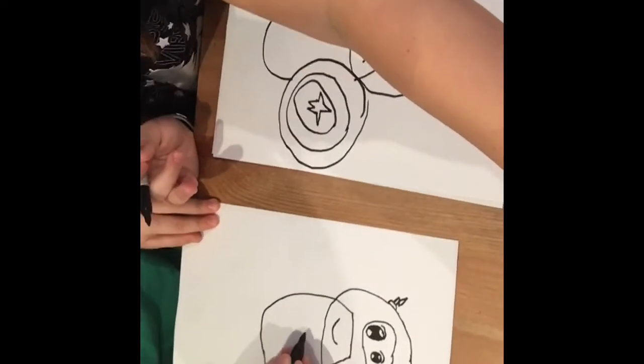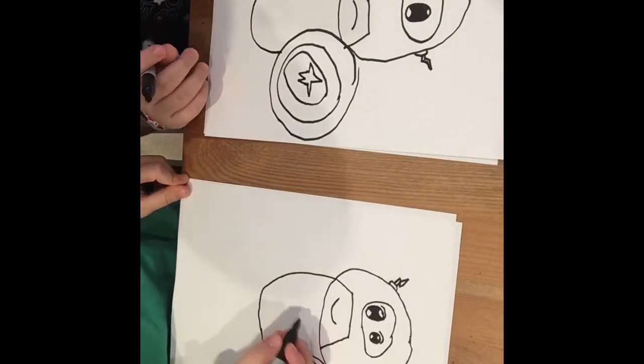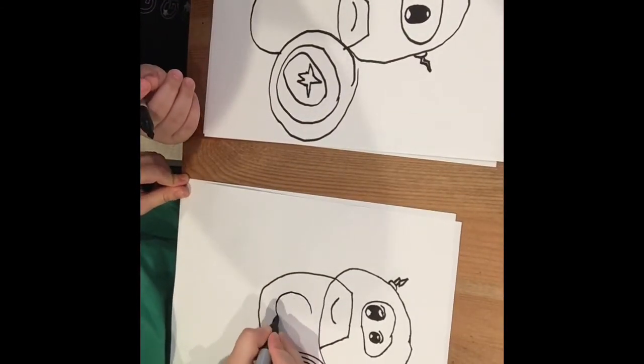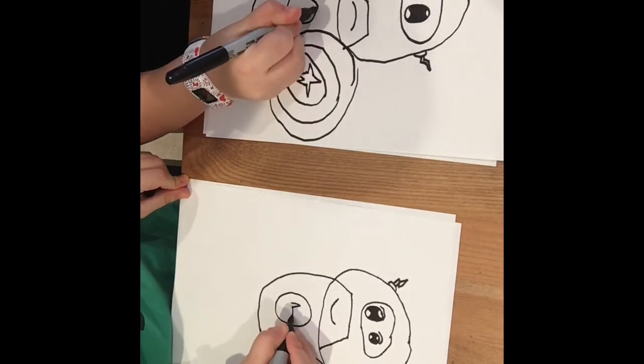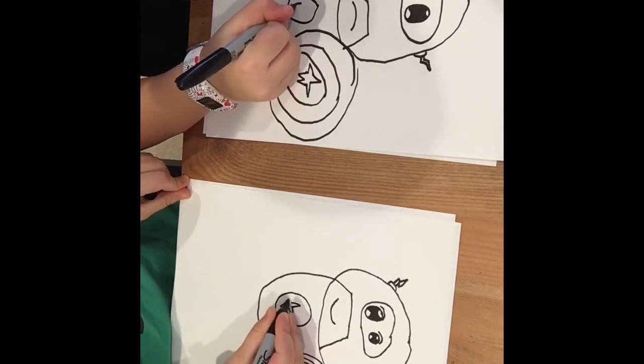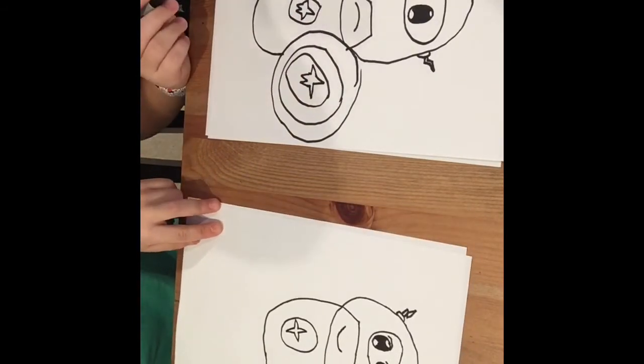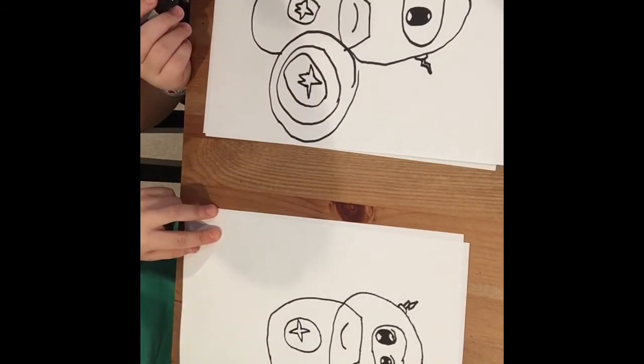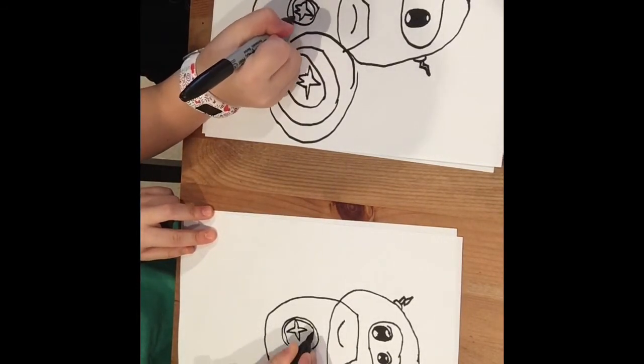I mean the details on the shirt. So a circle, and then a star inside. Another circle. There.